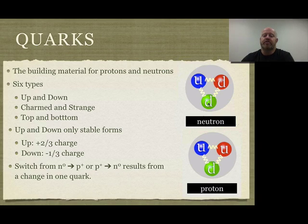The up and down quarks stay. To make a neutron, you use two down quarks and one up. To make a proton, it's two up and one down.